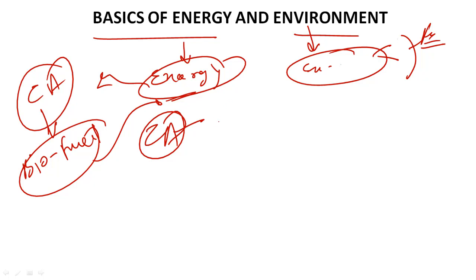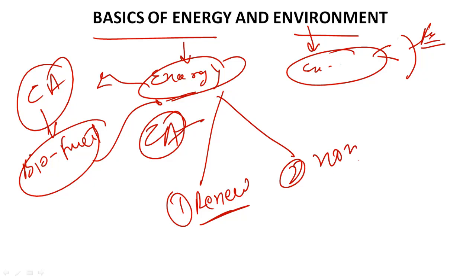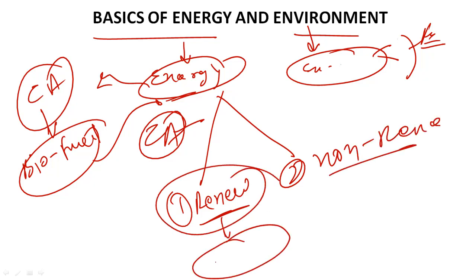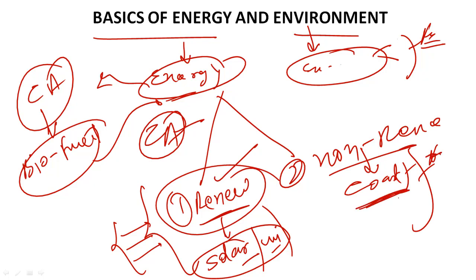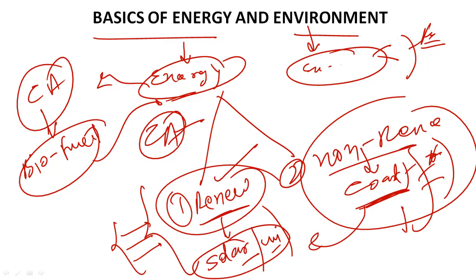In energy, we have two main types. First is renewable energy sources, and second is non-renewable energy sources. Renewable means those provided by nature — for example solar energy, which is totally free of cost; wind energy — there is no pollution. Non-renewable energy sources include coal, thermal power plants, hydro, and nuclear power plants. After using this energy there are lots of pollution problems, like nuclear waste issues.